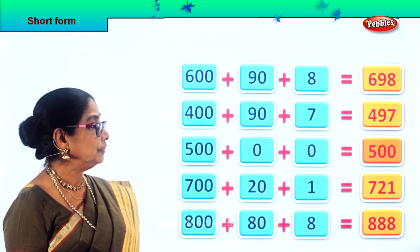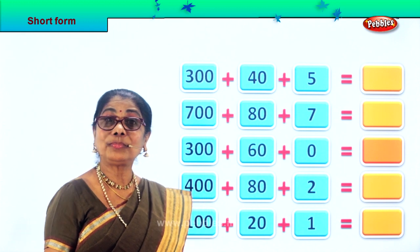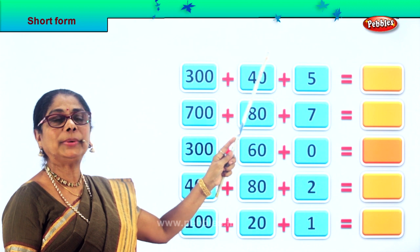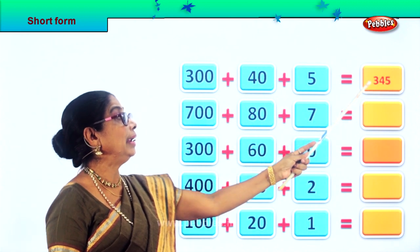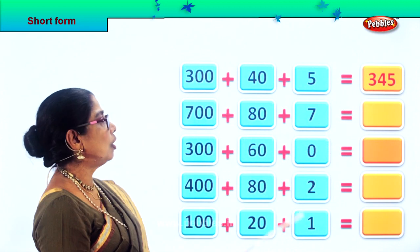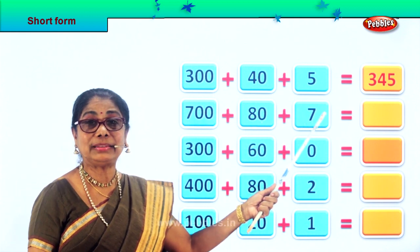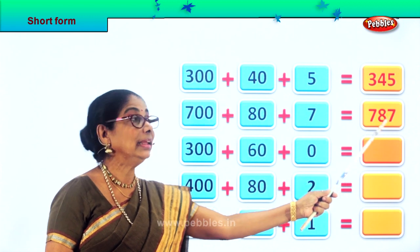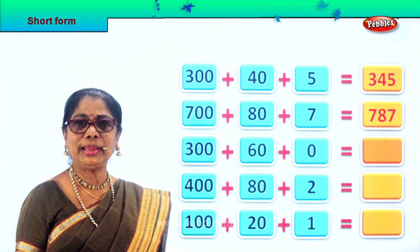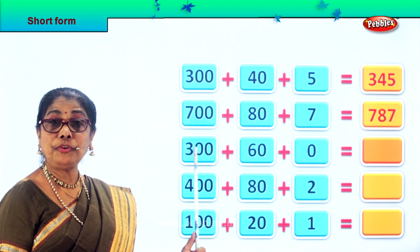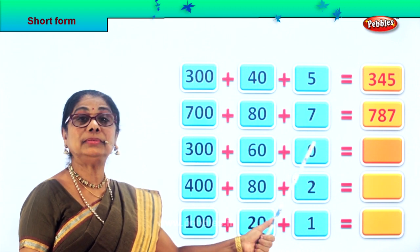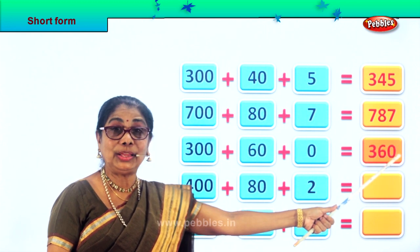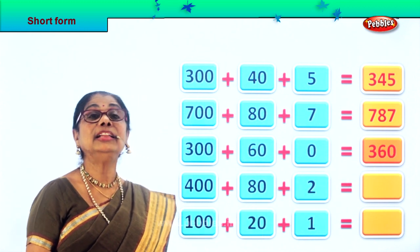Let's take one more set of numbers and do the short form. What is the short form for 300 plus 40 plus 5? 300 plus 40 plus 5 equal to 345. What is the short form for 700 plus 80 plus 7? 700 plus 80 plus 7 equal to 787. What is the short form for 300 plus 60 plus 0? 300 plus 60 plus 0 equal to 360.